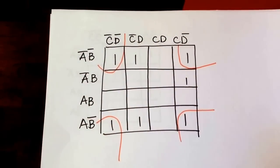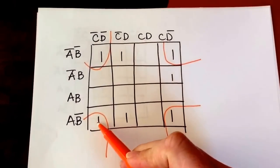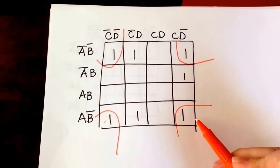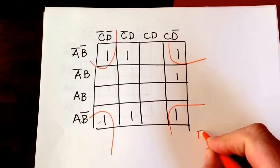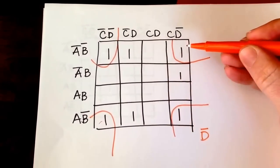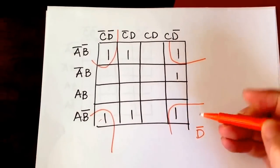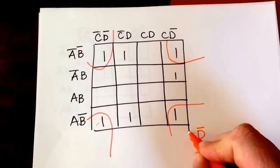Okay, so let's think about the term for this one. From here to here, C changes, so I get not D from that piece. And from here to here, A changes, so I get not B from that piece.